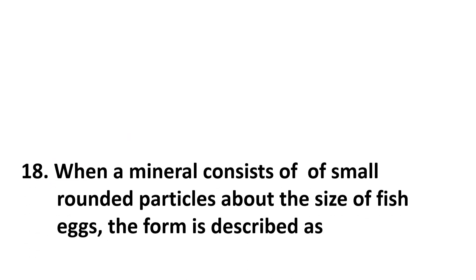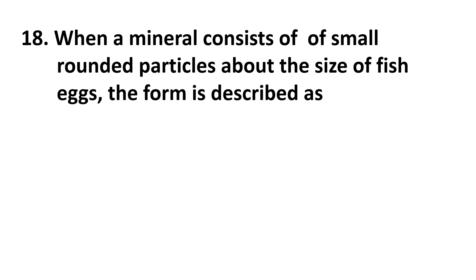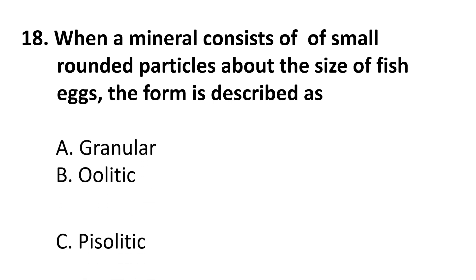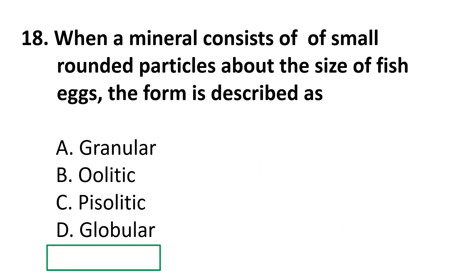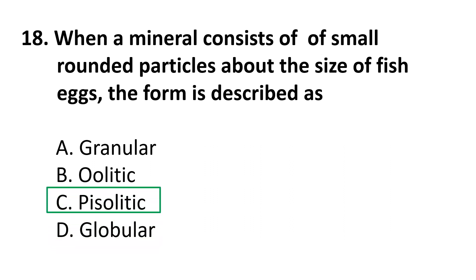Question 18: When a mineral consists of small rounded particles about the size of fish eggs, the form is described as — A. granular, B. oolitic, C. pisolitic, D. globular. The correct answer is B, oolitic. Oolitic means the mineral contains particles about the size of fish eggs.